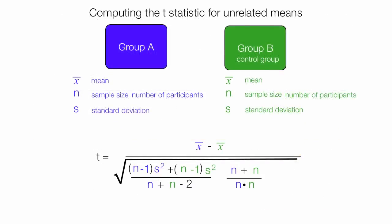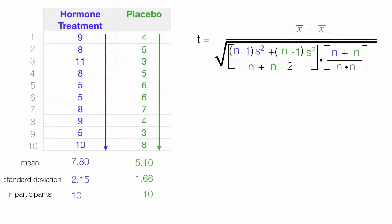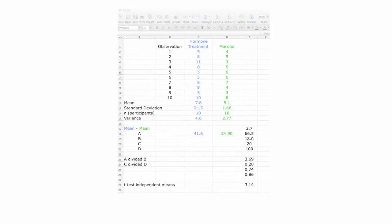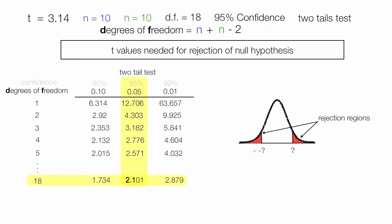I do the same thing for unrelated means. I show you the formula and the concept behind it, demonstrate how to calculate this by hand, include an example using Microsoft Excel, and also show you how to interpret the results and calculate the degrees of freedom, so on and so forth.